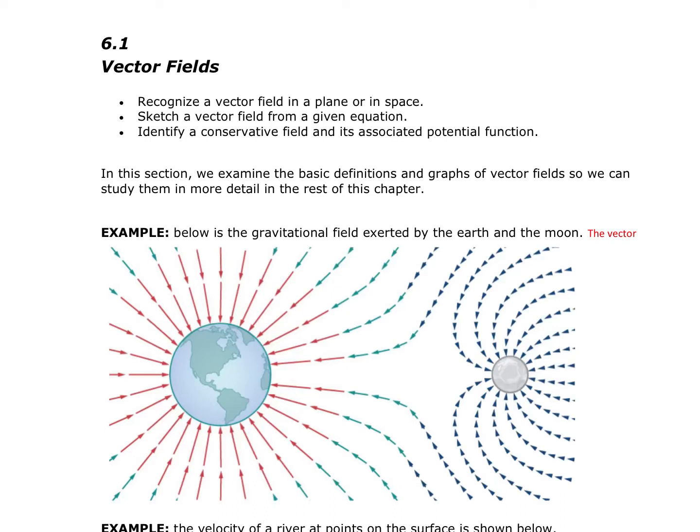In this video we're going to look at vector fields. We're going to be able to recognize a vector field in a plane or in space, sketch some vector fields given the equation, and identify a conservative field and its associated potential function. In this section we're going to examine very basic definitions and graphs of vector fields so that we can study them later in better detail in this chapter.